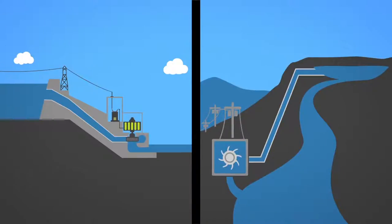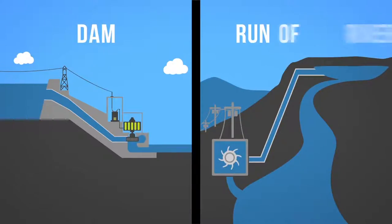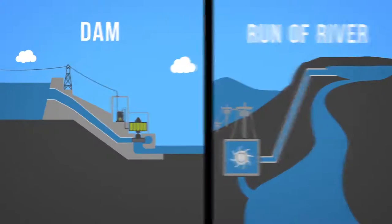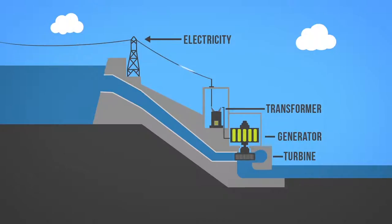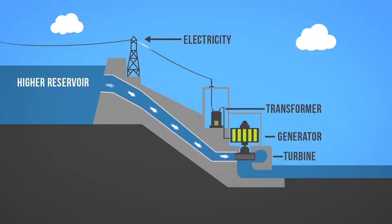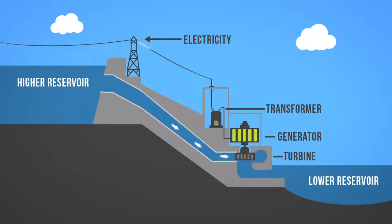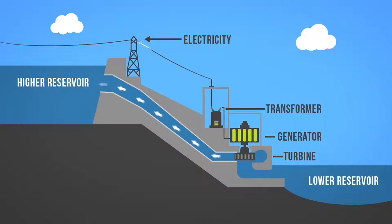There are two main types of hydroelectricity production: dams and run of river. Hydro dams utilize the potential energy from dammed water to produce electricity. A dam is a large barrier constructed to raise the level of water and control its flow. The elevation created by the dam creates gravitational force for turning the turbine when water is released. Some dams also contain an additional reservoir at their base where water is stored to be pumped to the higher reservoir for release when electricity is in demand. This is referred to as pumped storage hydro.